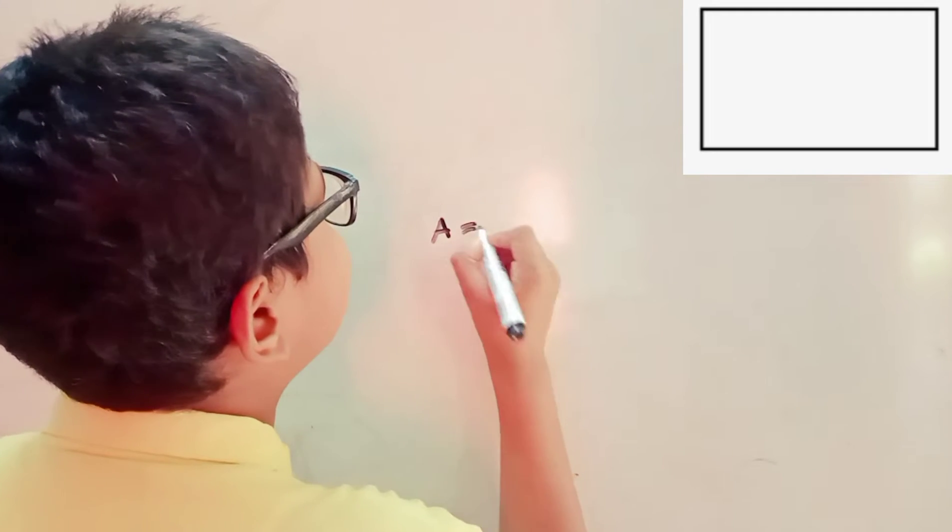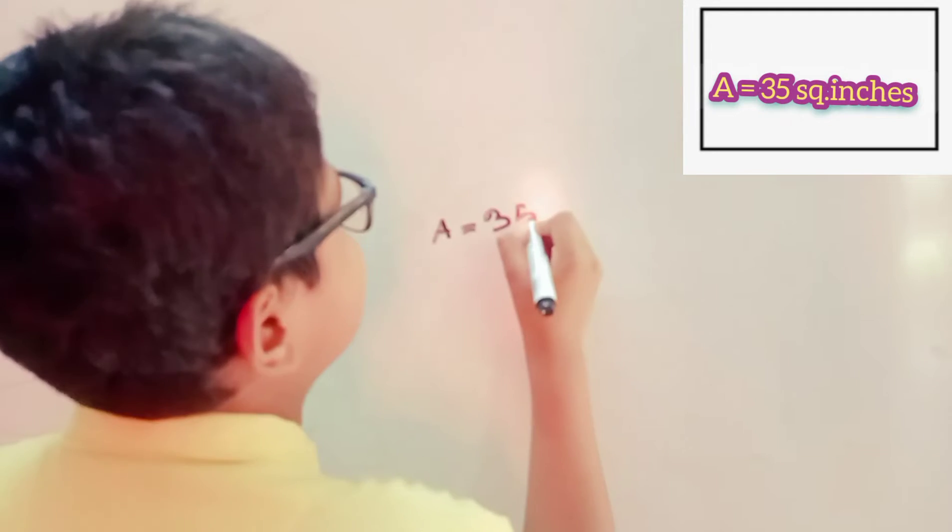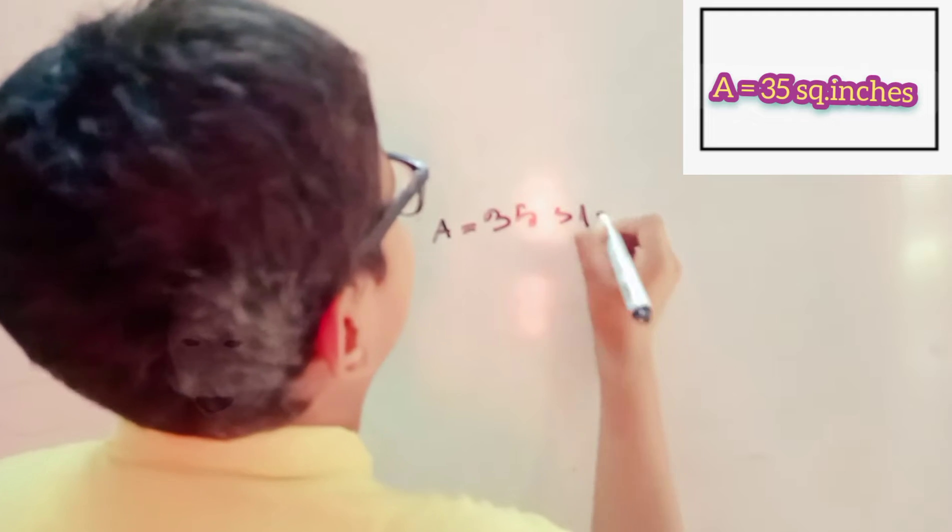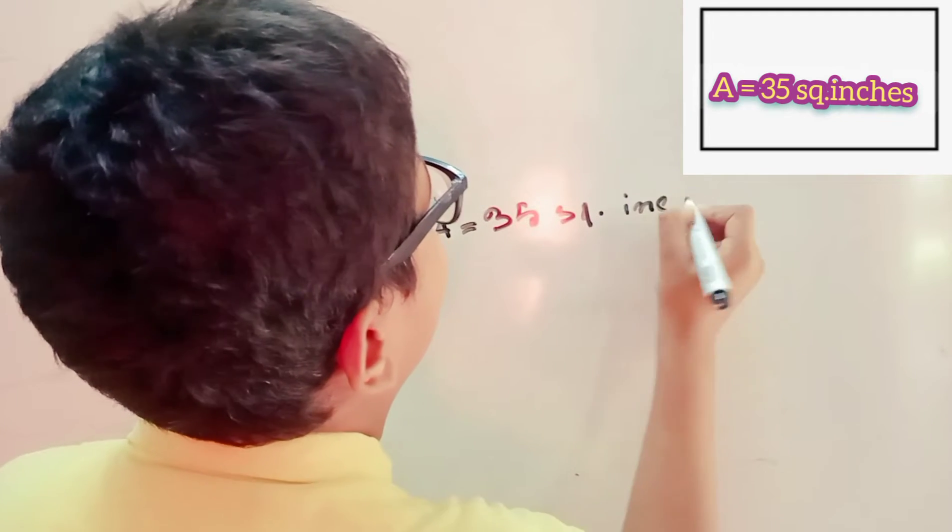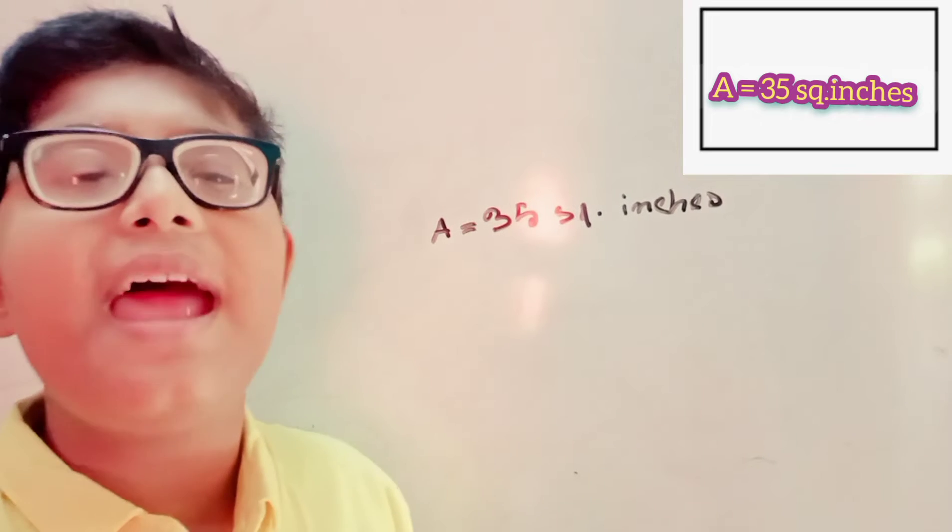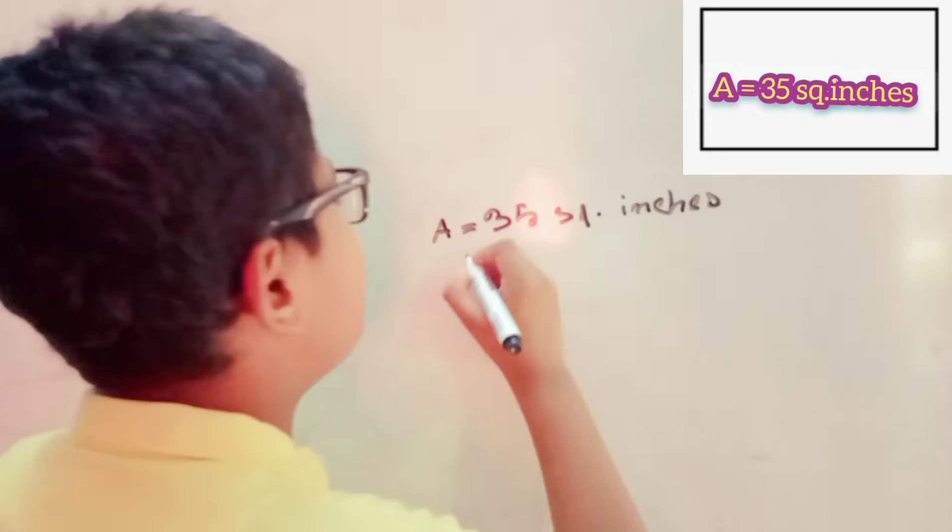Suppose a rectangle that has an area of 35 square inches and a length of 7 inches.